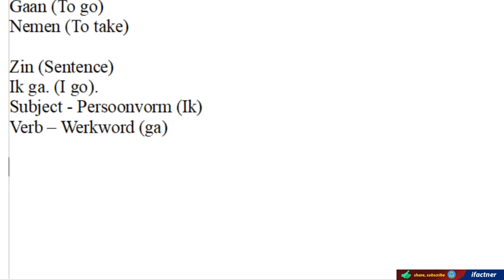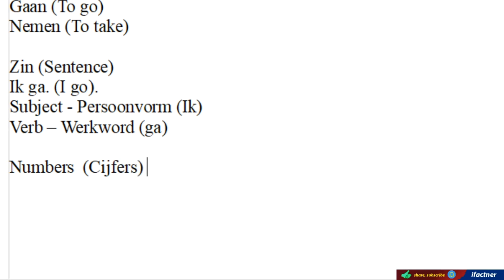Let's talk about some ciphers, or numbers, in Dutch. Numbers are called ciphers. And if you want to count, counting is called talen. So we have got a lot of numbers in Dutch.